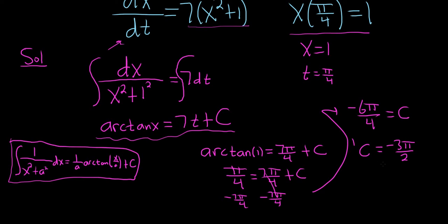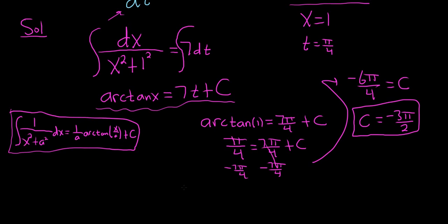I'm going to put this in a box because this took a little bit of work. It's important. OK. We have to find an explicit solution. Let's go ahead and first plug in our C. So arctan of x is equal to 7 t minus 3 pi over 2.